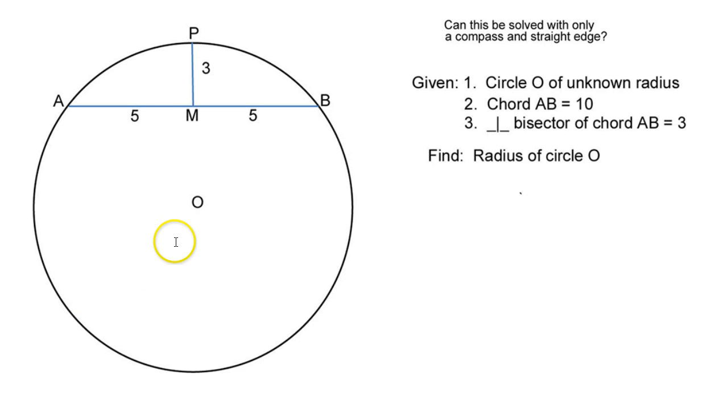In this lesson, we will find the radius of this circle given a chord and a perpendicular bisector.